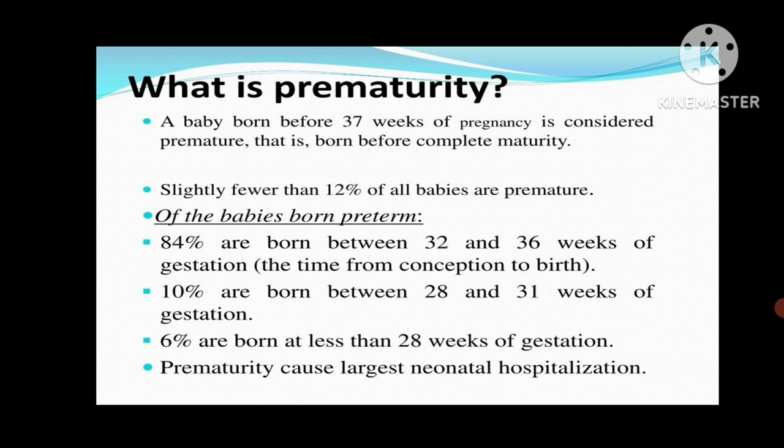What is prematurity? A baby born before 37 weeks of pregnancy is considered premature — meaning the baby is born before completing its full maturity.